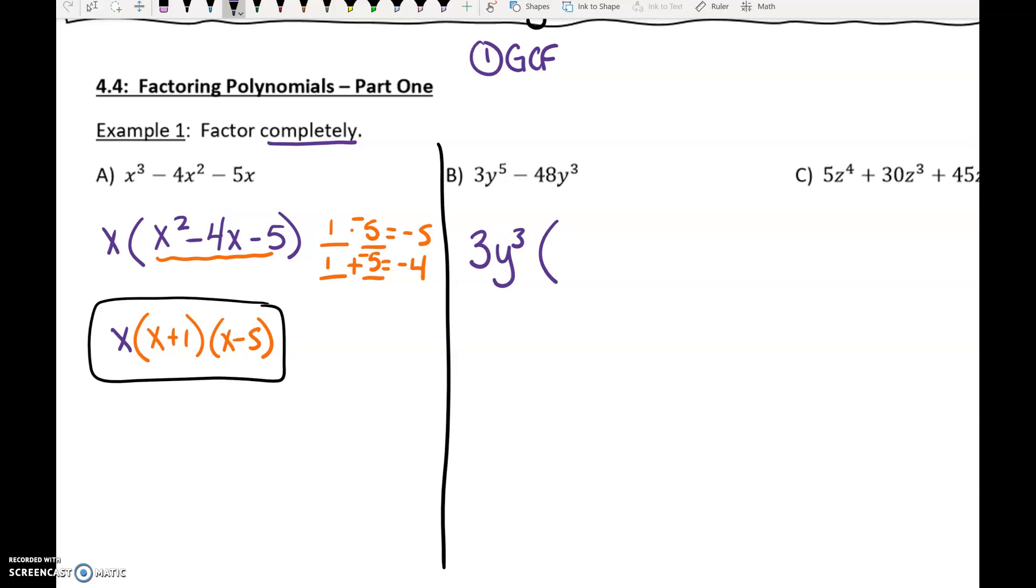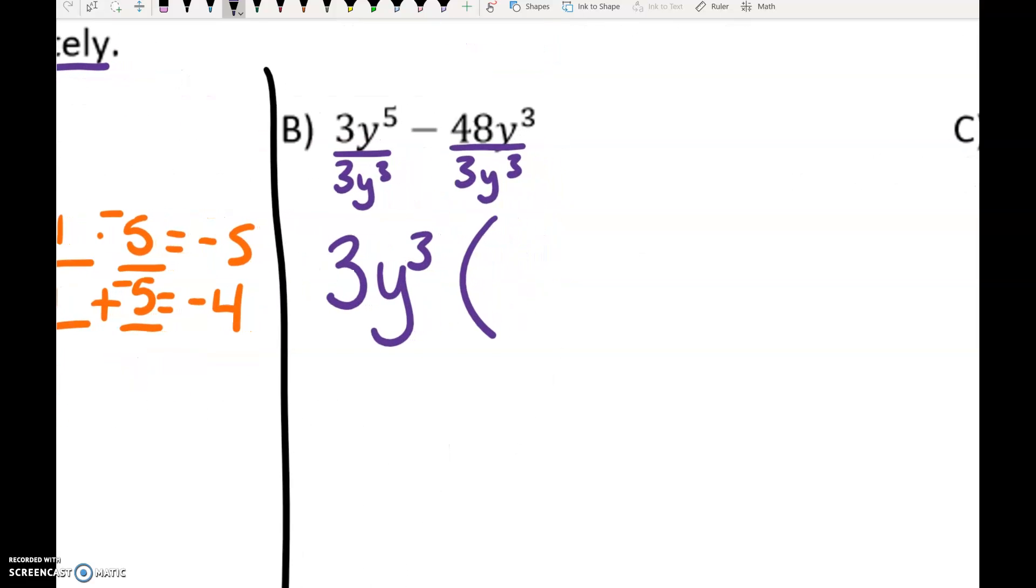Some people find this helpful: if you write divided by 3y to the 3rd underneath each term, that might help you to see what's left. So the 3 divided by the 3 is a 1. Y to the 5th divided by y to the 3rd is going to give us y squared. You have 5 of them, you're taking 3 of them away, that means you've got 2 of them left. 48 divided by 3 is 16, and we're taking the y cubed out.